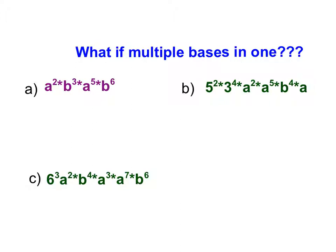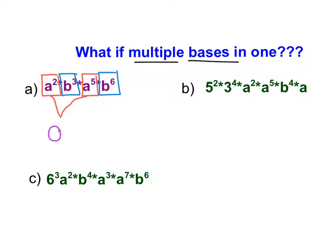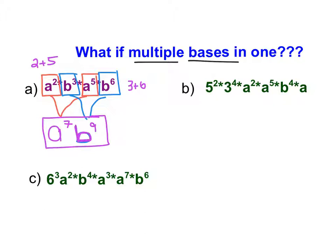Now that we've got this down with just one base, we're going to look at what we do with multiple bases in one problem. In part A, we have A to the power of 2 and A to the power of 5, plus B to the power of 3 and B to the power of 6. We focus on one base at a time: A² and A⁵ combine to A to the power of 7, and B³ and B⁶ combine to B to the power of 9.